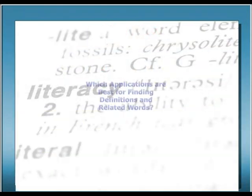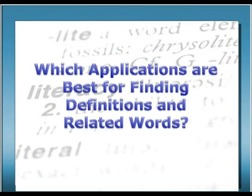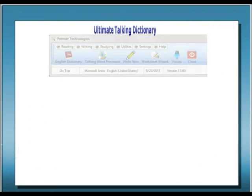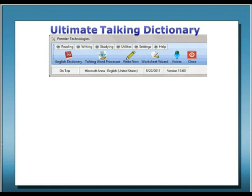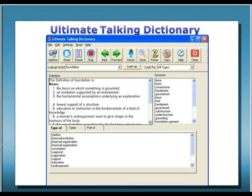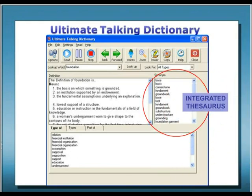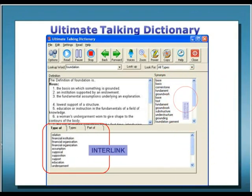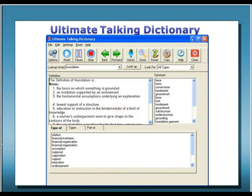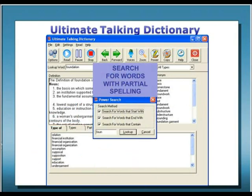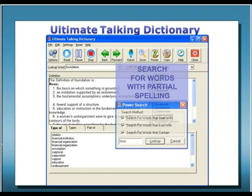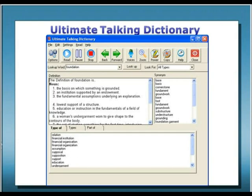What applications are best for looking up not only definitions of words, but synonyms and other words that are related in meaning? The Ultimate Talking Dictionary is a comprehensive electronic dictionary comprised of over 250,000 words, terms, persons, and phrases. It also contains an integrated thesaurus and interlink technology that lets you easily find words that are related to each other in meaning. The Ultimate Talking Dictionary even allows you to search for words when you are unsure of the correct spelling. And because it is software-based, you can easily use the Ultimate Talking Dictionary at the same time you are using other applications.